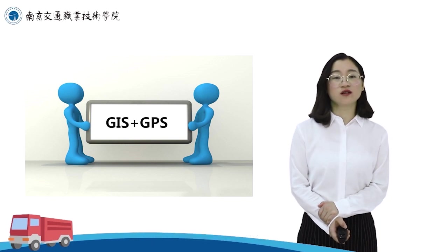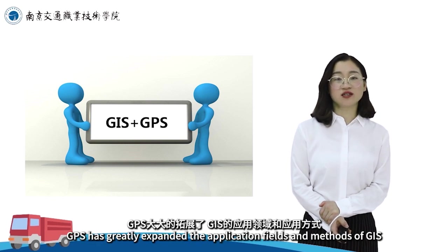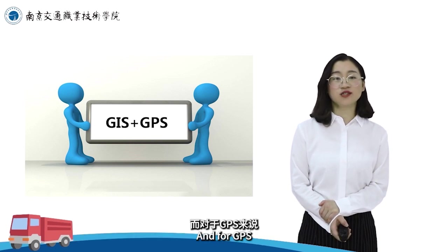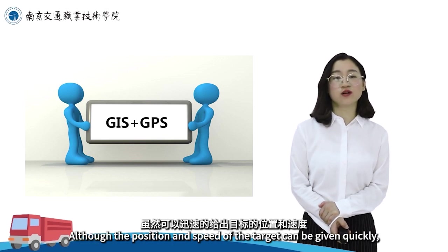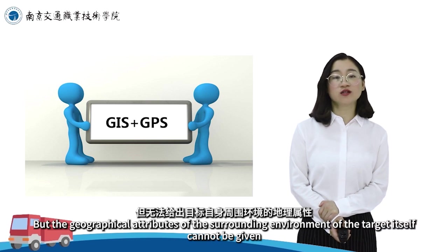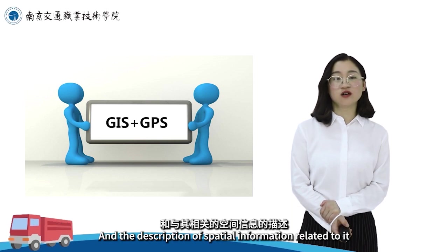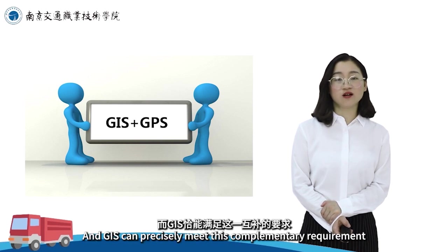GIS应用于物流分析，主要是利用GIS强大的地理数据功能来完善物流分析技术，从而在货物运输路径、仓库地址的选择等方面提供巨大技术支持。GIS与GPS之间关系密切：GPS提供了一种极为重要的实时动态精确获取空间数据的方法，是GIS的重要数据源，大大拓展了GIS的应用领域和应用方式。而GIS恰能弥补GPS无法描述目标周围环境地理属性和空间信息的不足。